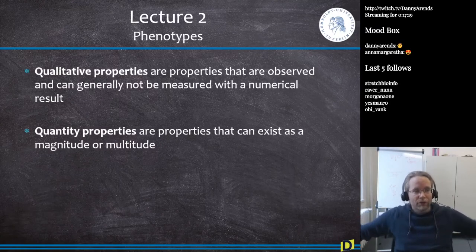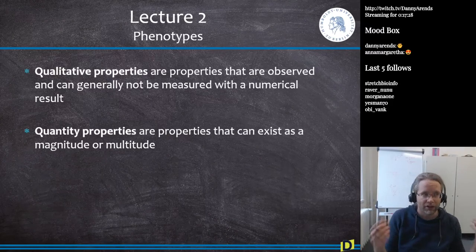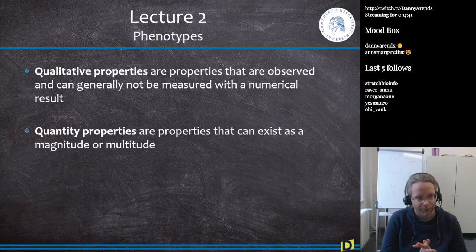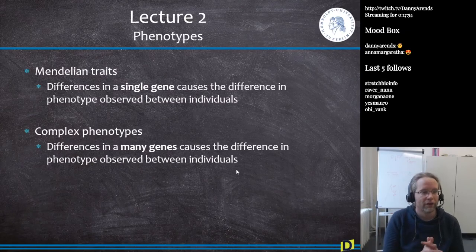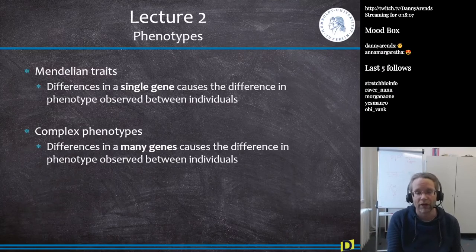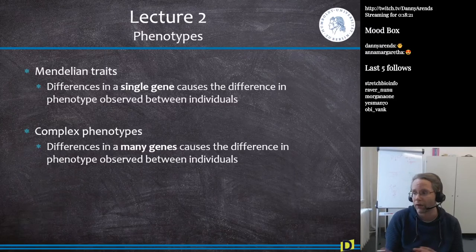In Lecture 2 we talked about phenotypes — qualitative properties, which are hard to put a number on and not measured with numerical results, and quantitative properties, which exist with a magnitude and can be measured using SI units. We also covered Mendelian traits, which are caused by a single gene. For example, earwax: there is dry earwax and wet earwax controlled by a single gene.